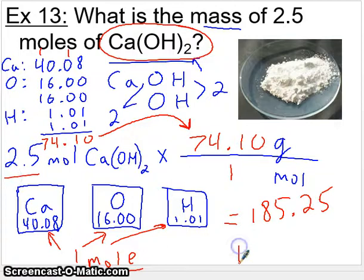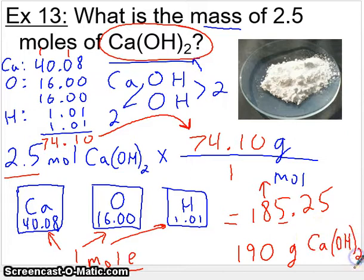So we will have to actually round this to 200. And because we have a 5, the 9 goes up. So 190 grams. You can put calcium hydroxide if you would like at the back of it. But we got 190 grams.